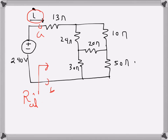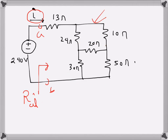When I look at this part, I can see that there is a delta connection here. If I convert this delta into a Y, finding the equivalent resistance will be easier. The delta nodes are this one, this one, and this one. These three resistances are the delta resistances.